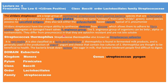Streptococcus thermophilus, also known as Streptococcus salivarius, is non-motile and classified as a lactic acid bacterium. It is found in fermented milk products and is used in the production of yogurt and cheese. Yogurt containing live cultures of Streptococcus thermophilus is thought to be beneficial to health, as the bacteria break down lactose — making it helpful for lactose-intolerant patients.